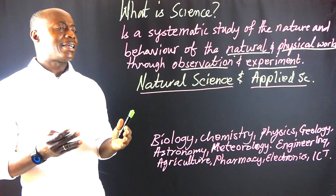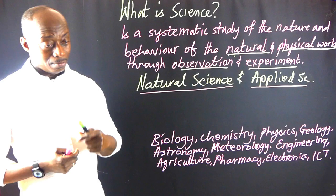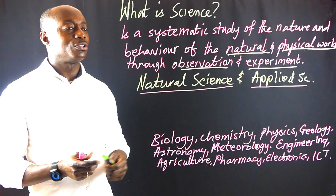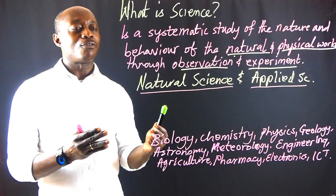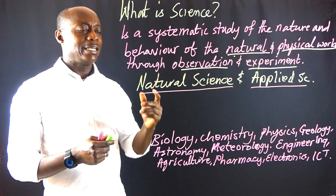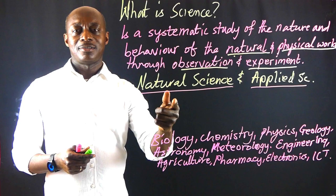Well, natural science deals with the physical world. So a subject like biology is a typical example of natural science. Chemistry is also a typical example of natural science. However, there are some aspects of science that require knowledge from one of the natural sciences before one can study that subject.